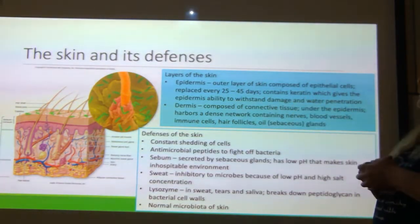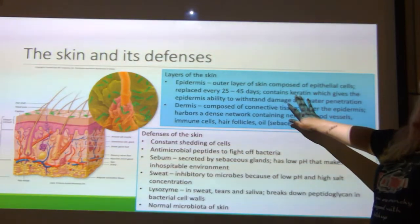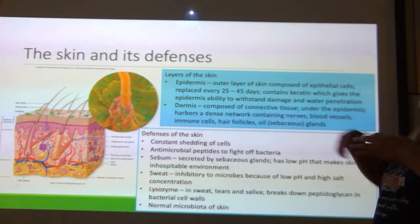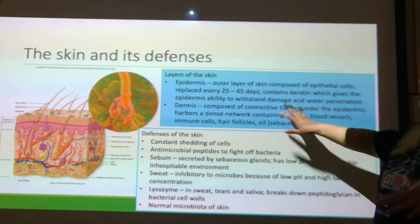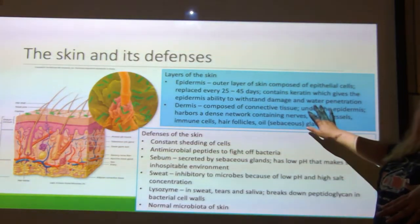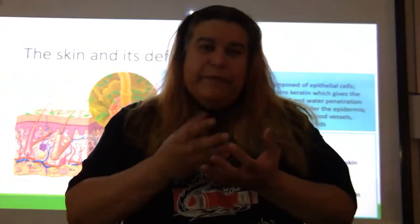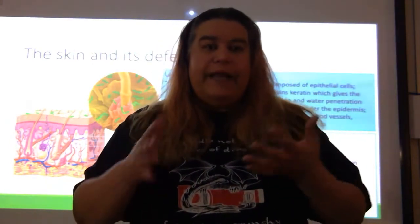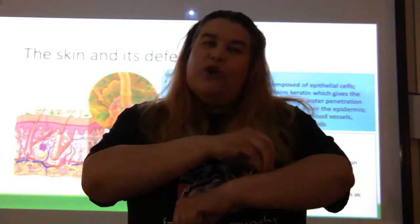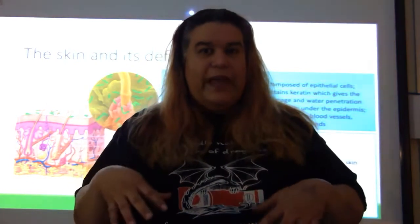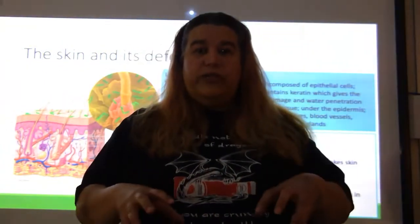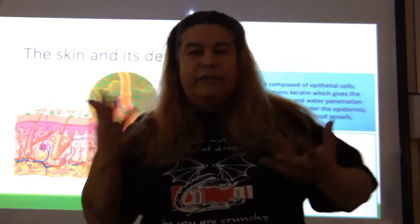Epithelial cells are replaced every 25 to 45 days. They contain keratin — spelled with a K — because it is a hard, almost plastic-like substance. It gives strength to our skin cells, basically allowing us to withstand damage and water penetration. Keratin helps water bead on our skin and actually protects the under layers of the skin, so it doesn't let things get past it.